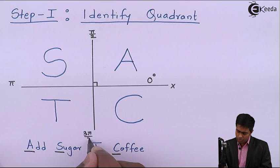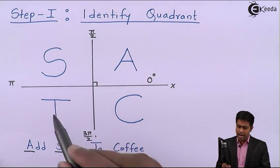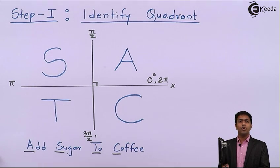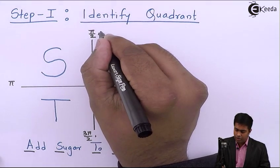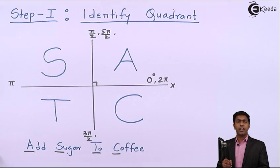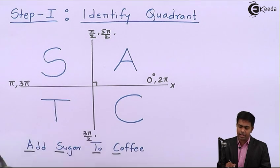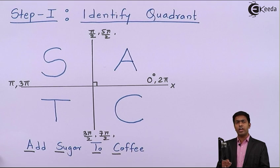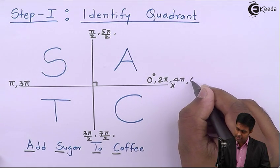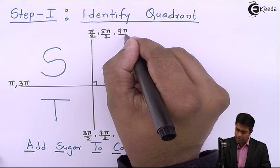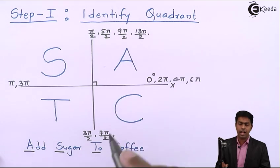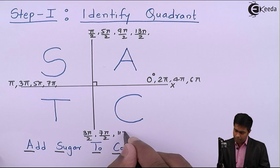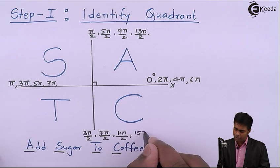Continuing further: adding 90 degrees each time, we get 5π/2, then 3π, then 7π/2, then 4π, and so on. On the positive x-axis we get 4π, 6π; on the negative x-axis we get 5π, 7π; on the positive y-axis we get 9π/2, 13π/2; and on the negative y-axis we get 11π/2, 15π/2 and so on.